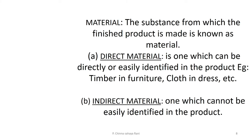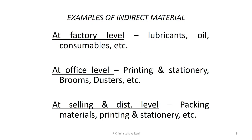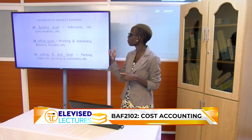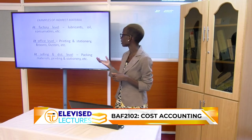A material is the substance from which the finished product is made. Direct material can be directly or easily identified in the product — for example, timber in furniture, cloth in a dress, or flour in pastries. Indirect material cannot be easily identified in the product — at factory level, examples include oil, lubricants, and consumables; at office level, printing and stationery, brooms and dusters. They are indirect because they're used by a variety of products and not directly attributed to one particular commodity.